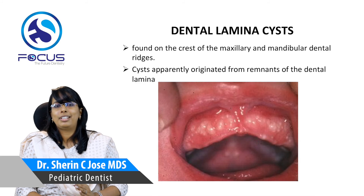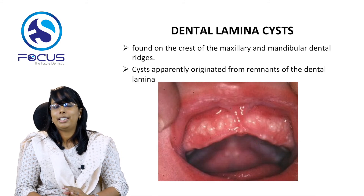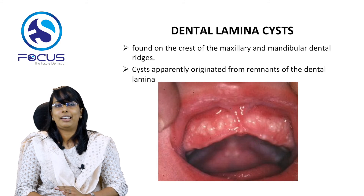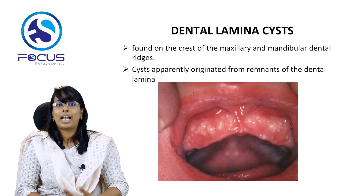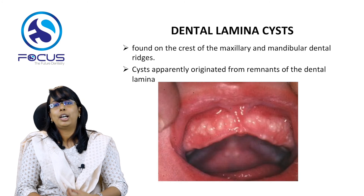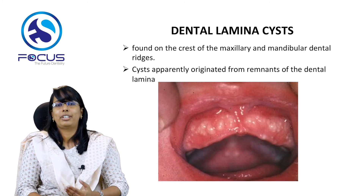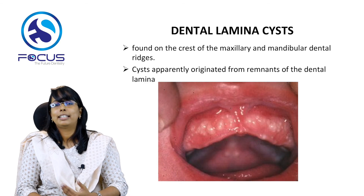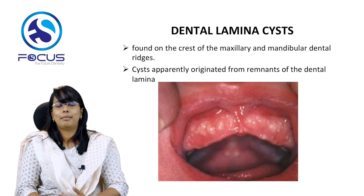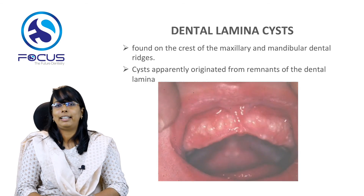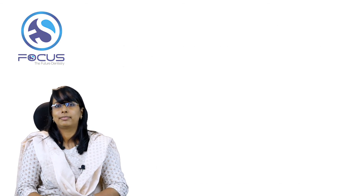In summary, during the gum pad stage it is important to know the various grooves, their clinical significance, and what happens when the gum pads occlude. Key clinical topics include natal and neonatal teeth, ulcerative lesions seen in infants during the gum pad stage, and pre-eruptive lesions such as Epstein pearls, Bohn's nodules, and dental lamina cysts.